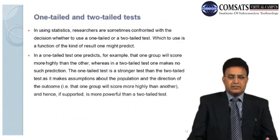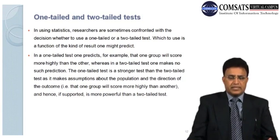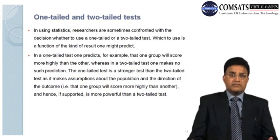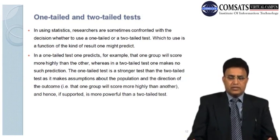One-tailed and two-tailed tests: in using statistics, researchers are sometimes confronted with the decision whether to use a one-tailed or a two-tailed test. In a one-tailed test one predicts, for example, that one group will score higher than the other, whereas in a two-tailed test one makes no such prediction. The one-tailed test is a stronger test as it makes assumptions about the population and the direction of the outcome, and if supported, is more powerful than a two-tailed test.